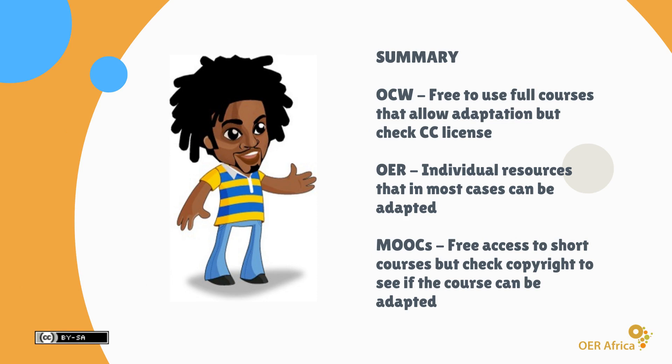To summarize: OCW, or open courseware, are free-to-use full courses that allow adaptation, but you do need to check the Creative Commons license. OERs tend to be individual assets or resources that in most cases can be adapted. While MOOCs are free access to short courses, you do need to check the copyrights if you want to adapt the course for new purposes.